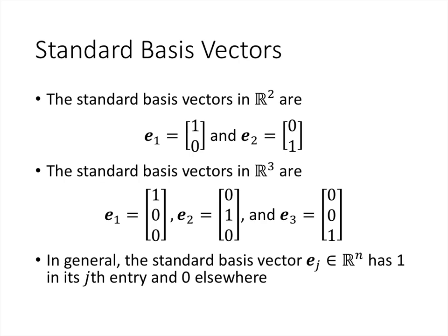To get there, we need to talk about something called standard basis vectors. In R^n, we have n standard basis vectors. In R2, we have two standard basis vectors: the vectors (1, 0) and (0, 1). The notation is that we call them lowercase e, so e1 and e2 are the two standard basis vectors in R2.